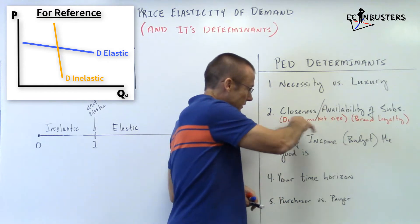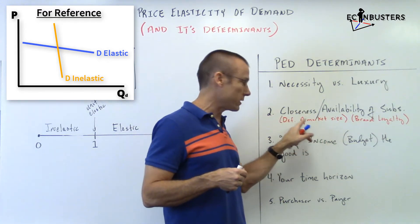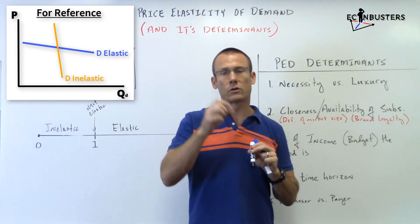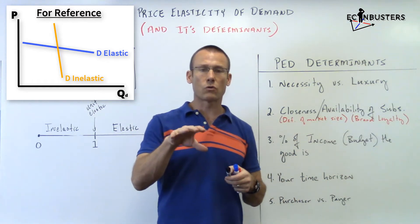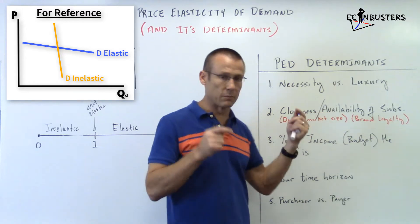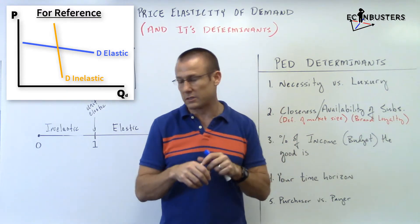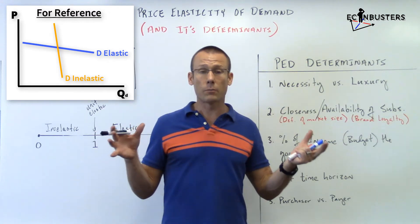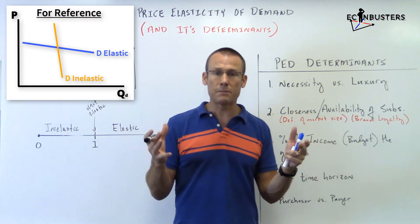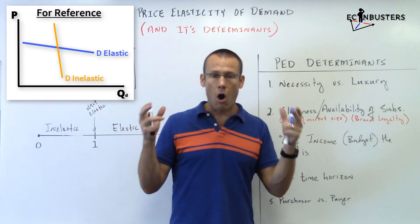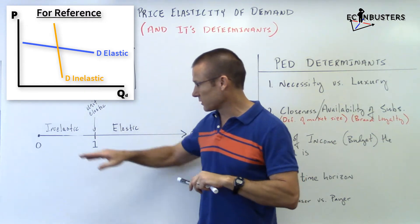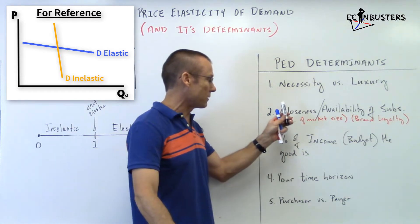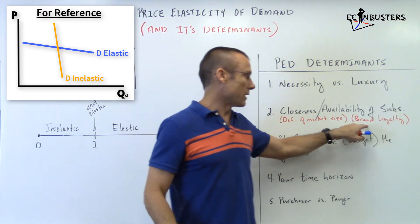A related determinant is definition of market size — it really wraps into closeness and availability of substitutes. If we define the market narrowly, like the Toyota Corolla specifically, there are close and available substitutes, so demand is elastic. But if we define it broadly as 'all automobiles,' there's no close substitute for that entire category, so demand is inelastic. As the market definition gets broader and broader, we become more inelastic.